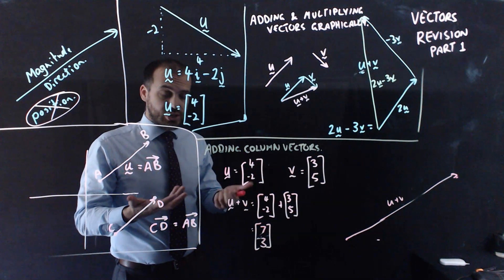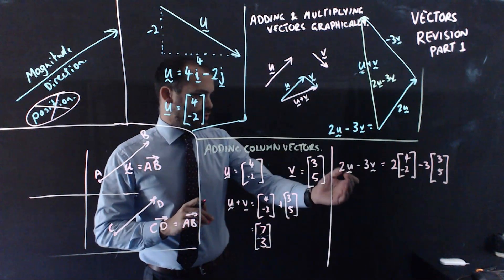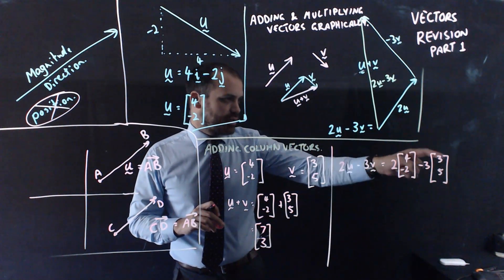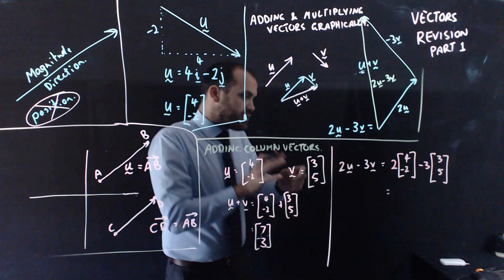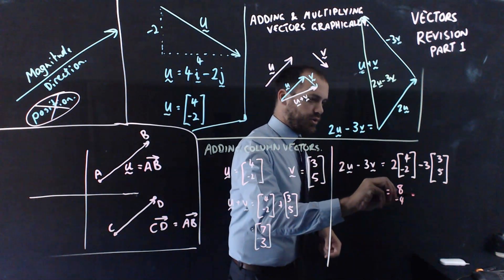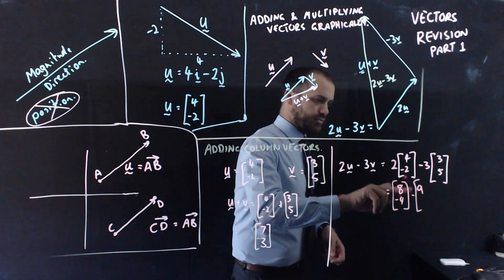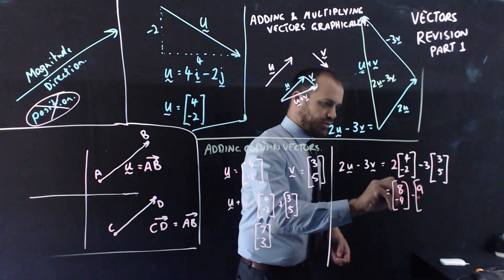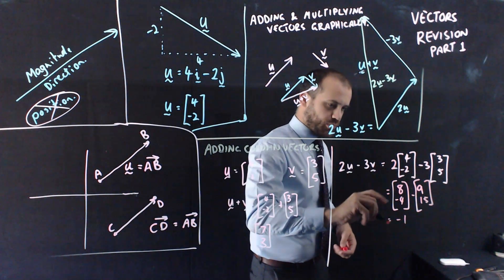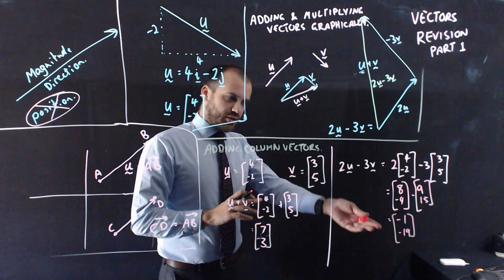We can also do like some multiplication plus addition, so if we had like 2U minus 3V we could do that as well. So 2U minus 3V would be equal to 2 times whatever U was, [4, -2], minus 3 times [3, 5]. And so then all the rules you've learnt for matrices we can kind of apply to this vector problem here. [8, -4] minus [9, 15], and we get 8 minus 9 is negative 1, negative 4 minus 15 is negative 19, and we have this new vector here.